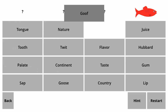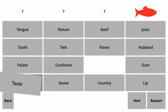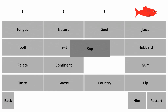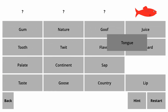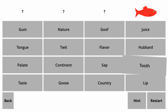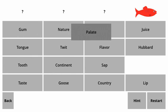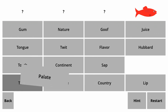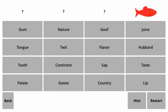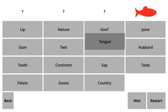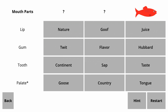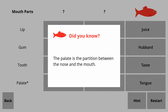Tongue, Tooth, Palate, Taste — replace one of them with Gum, or with Lip. Mouth parts: Lip, Gum, Tooth, and Palate.